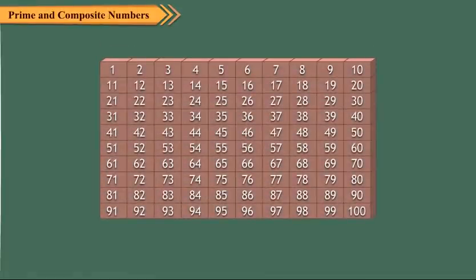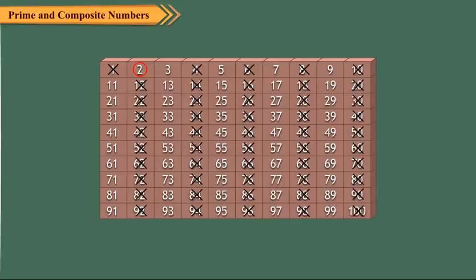Let us now find the prime numbers between 1 and 100. Prepare a table of numbers from 1 to 100. Since 1 is not a prime number, cross it out. 2 is a prime number, so encircle 2. Cross out the multiples of 2 as these are all composite numbers.